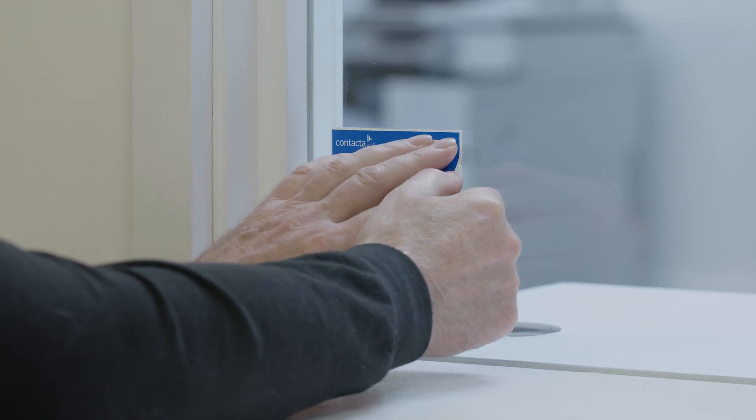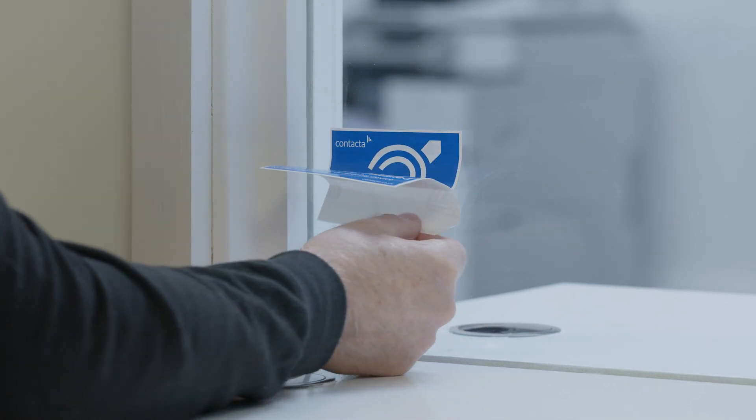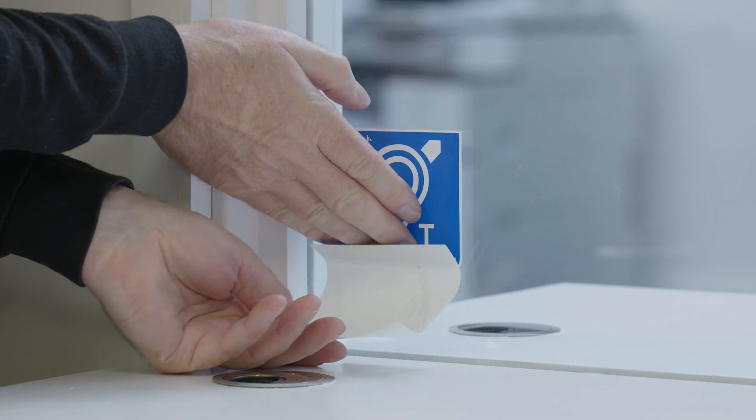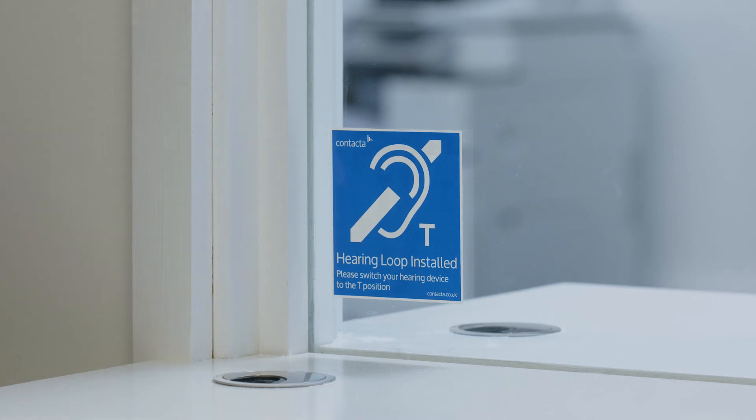Ensure all hearing loop signage is displayed prominently. Adhere the provided hearing loop sticker to the glass or plastic screen, or to other surfaces available. The label should be clearly visible in an unobstructed position.